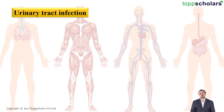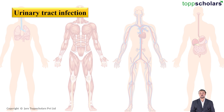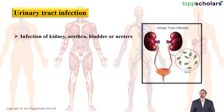Now let us look at our second disorder — UTI, also called urinary tract infection. This is an infection of anywhere in the urinary tract, including the kidney, the urethra, the bladder, or even the ureters.